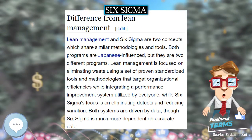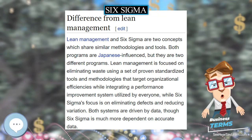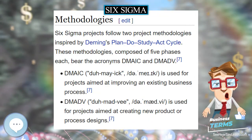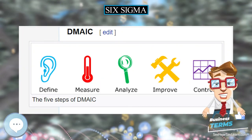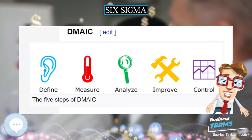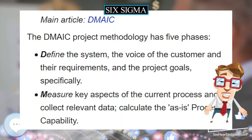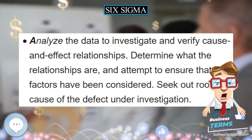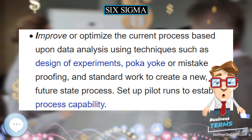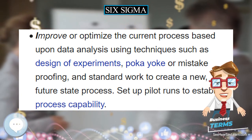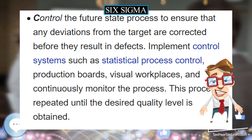The term Six Sigma, capitalized because it was registered as a Motorola trademark on December 28, 1993, originated from terminology associated with statistical modeling of manufacturing processes. The maturity of a manufacturing process can be described by a Sigma rating indicating its yield or the percentage of defect-free products it creates — specifically, to within how many standard deviations of a normal distribution the fraction of defect-free outcomes corresponds. Motorola set a goal of Six Sigma for all of its manufacturing.